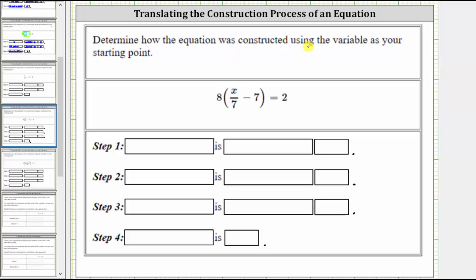Determine how the equation was constructed using the variable as the starting point. We are given the equation 8 times the quantity x divided by 7 minus 7 equals 2.